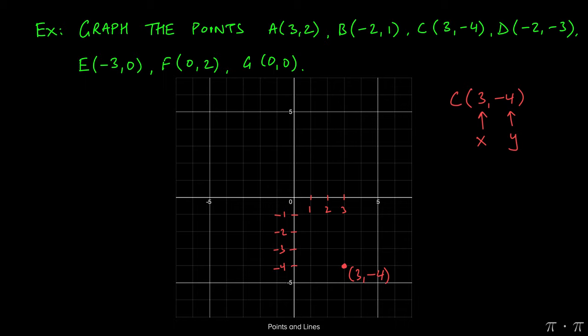For C, we're given (3,-4). That means we're going to go to the right by three units on the x-axis, because three is positive. And then from here, we're going to go down four units and get C(3,-4).